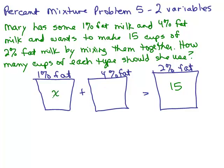So I'll let X be how many cups of the 1% fat and Y be how many cups of the 4% fat. So now that gives me one equation, X plus Y equals 15. I'm going to write that right here, X plus Y equals 15 is one equation that I get from looking at this picture.